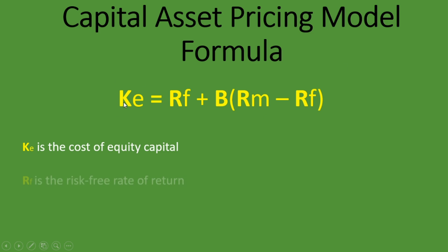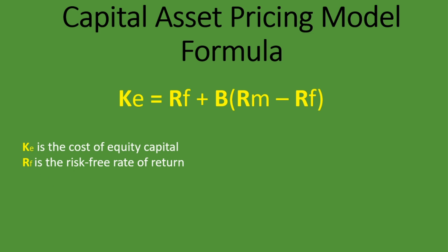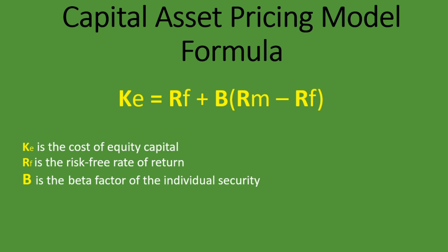KE is the cost of equity. RF stands for the risk-free rate — it's a risk-free rate of return. B stands for beta, so it is the beta factor for the individual security. We're going to show you how to do the calculation for the cost of equity using CAPM. We've done lessons on the risk-free rate and on the beta factor, so you can click on the links in the description below to check them out. And RM is the return from the market as a whole.